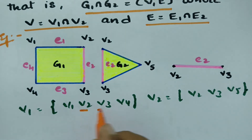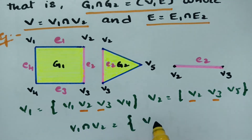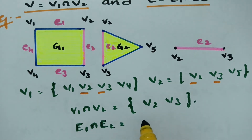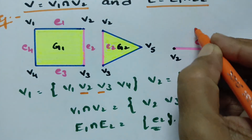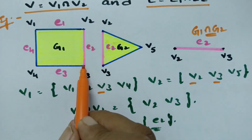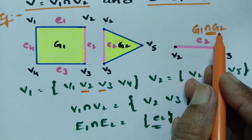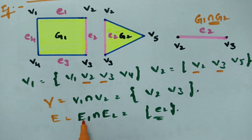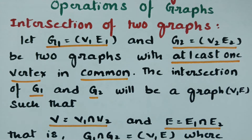The common vertices between g1 and g2 are v2 and v3, so v1 ∩ v2 = {v2, v3}. The common edge is e2, so e1 ∩ e2 = {e2}. Therefore the intersection graph g1 ∩ g2 = (v, e) where v = {v2, v3} and e = {e2}. This is the intersection of the two graphs.